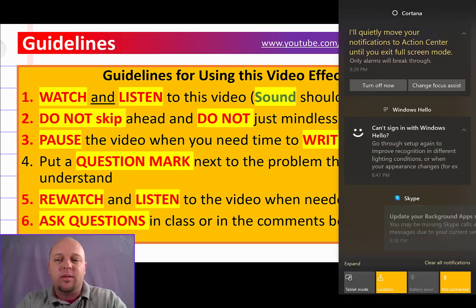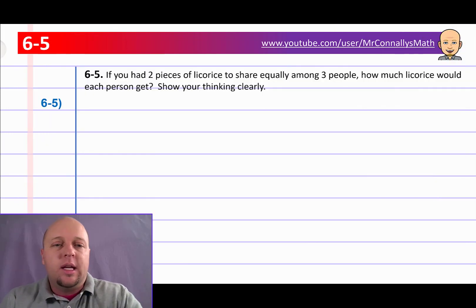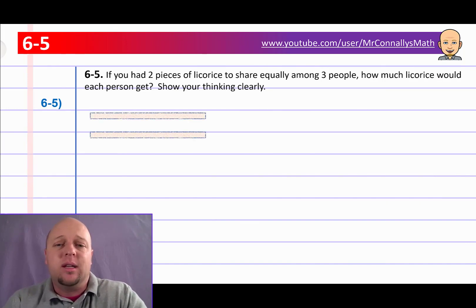All right, let's get started. It's question 6.5. If you had two pieces of licorice to share equally among three people, how much licorice would each person get? Show your thinking clearly. Okay, so we've got two pieces of licorice, and we've got three people.